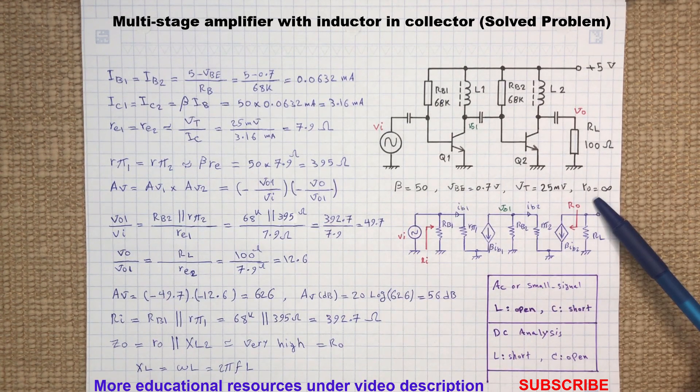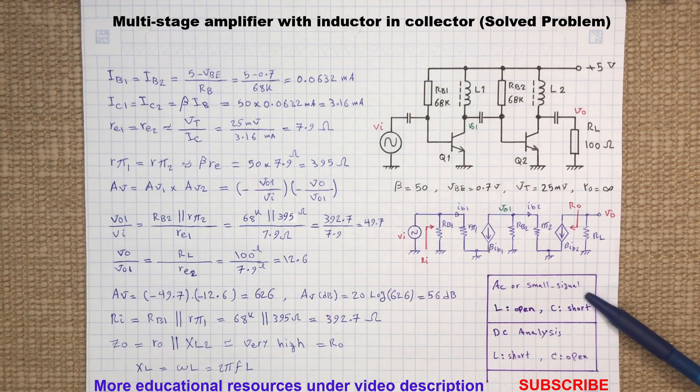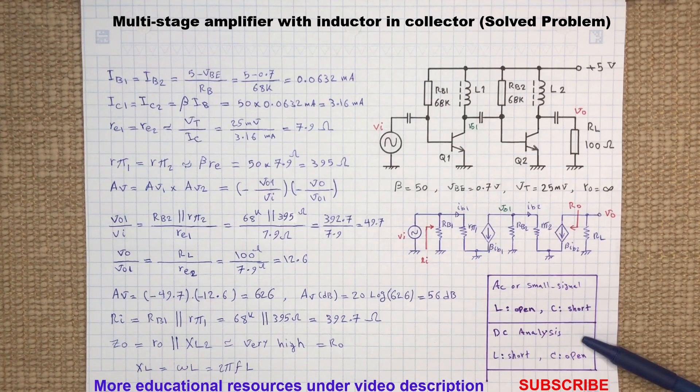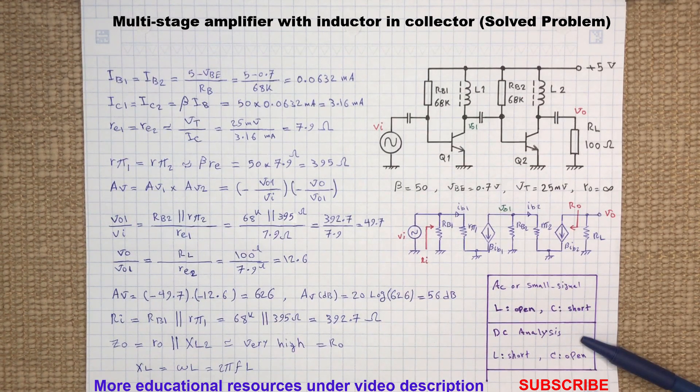Third, RO, the resistance between the collector and emitter, is very large. Therefore, with these assumptions, all inductors will be open and all capacitors will be short circuit for the small signal analysis, and all inductors will be short circuit and all capacitors will be open for the DC analysis.